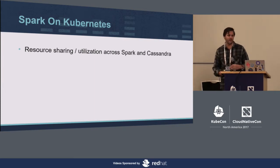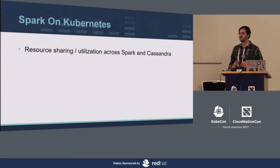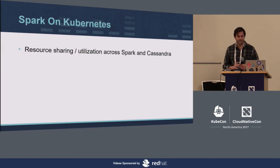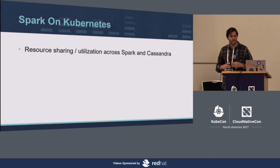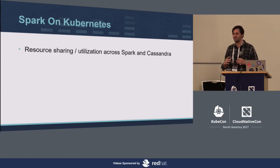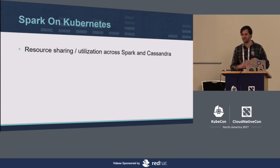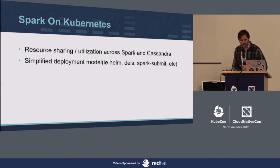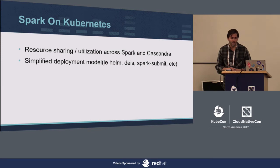Our solution was built on Kubernetes. We wanted to run Spark on Kubernetes. The main driver was to increase the resource utilization of all our pods — we didn't want a VM stood up just to run a single Spark worker. We wanted to maximize all the nodes in our cluster, decrease our operational cost as much as possible, and have a simplified deployment model.